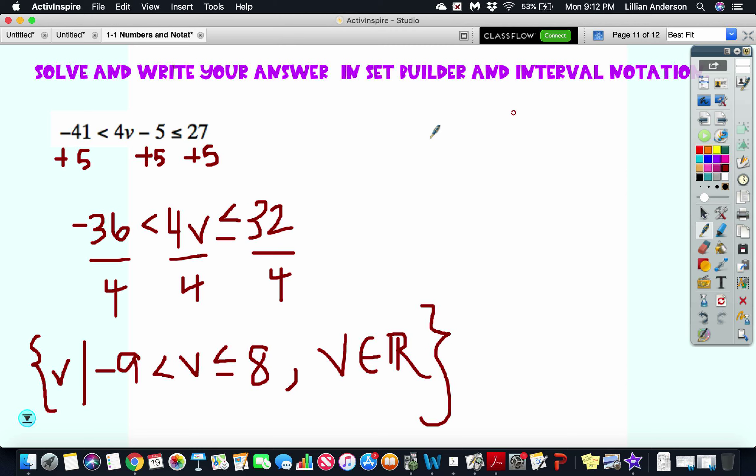How do you write this in interval notation? That's like looking at your number line and saying, this is negative 9 and then this is 8. Negative 9 is not included so it's an open circle, whereas 8 is included and it's everything that's in between. That's going to be negative 9 with the parentheses because it's not included, all the way to 8 with the square bracket because it is included.